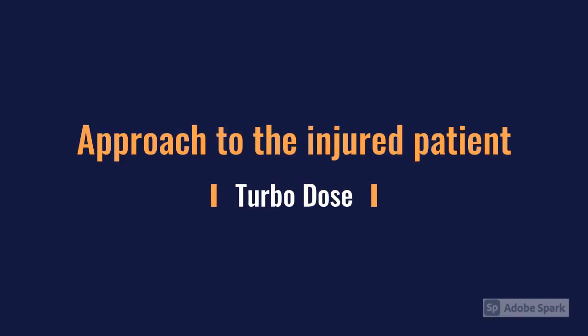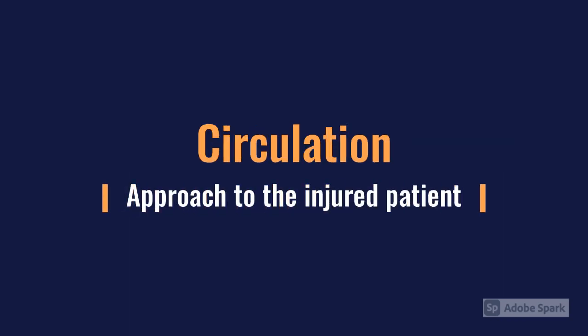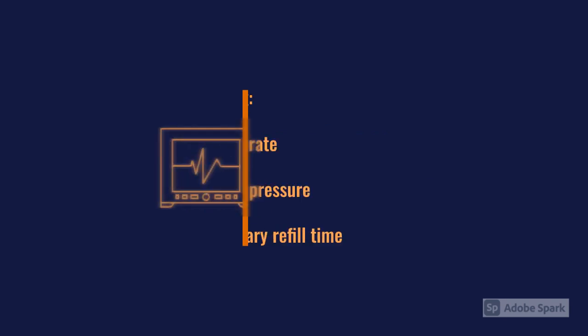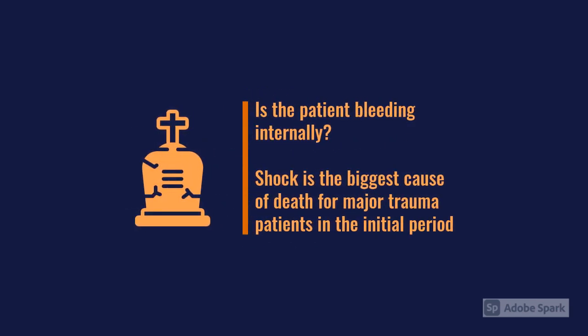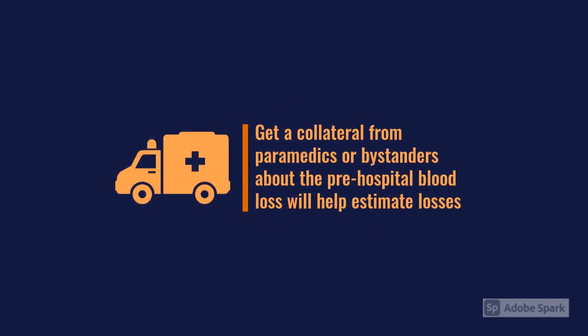Circulation is really the crux of trauma. Check heart rate and blood pressure, but also reassess for significant ongoing hemorrhage. Pelvic fractures, for example, might not be immediately catastrophic but need to be picked up. Look at areas a patient can bleed out into: chest, abdomen, pelvis, and long bones. Get a good history of how much blood loss occurred prior to arrival — it's easy to overlook that the patient was found in a pool of their own blood on scene.